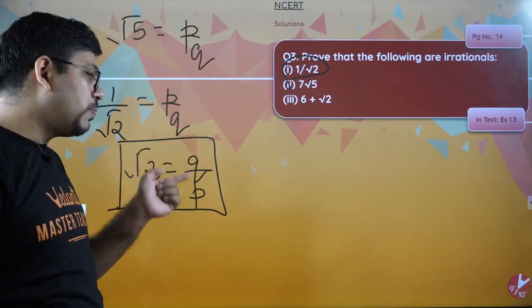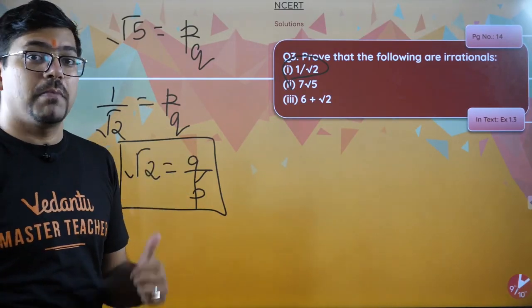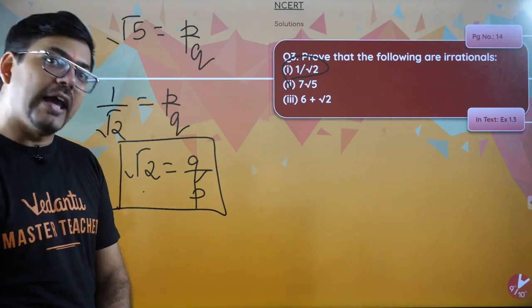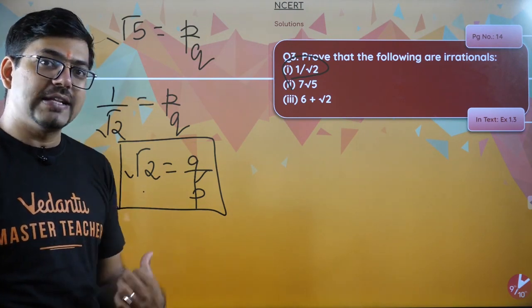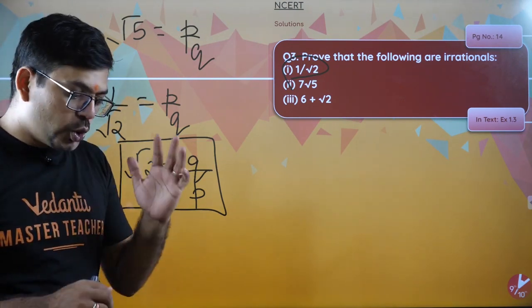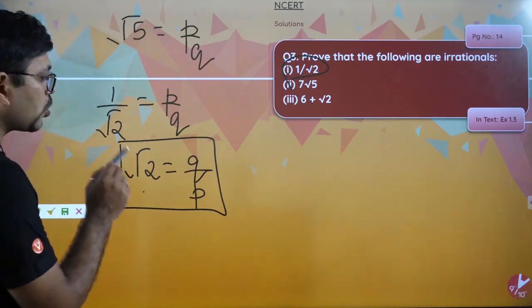Finally, you'll write that since p by q is a rational number, therefore q by p will also be a rational number. But we know that root 2 is irrational, therefore our assumption is wrong and hence this number will be irrational.